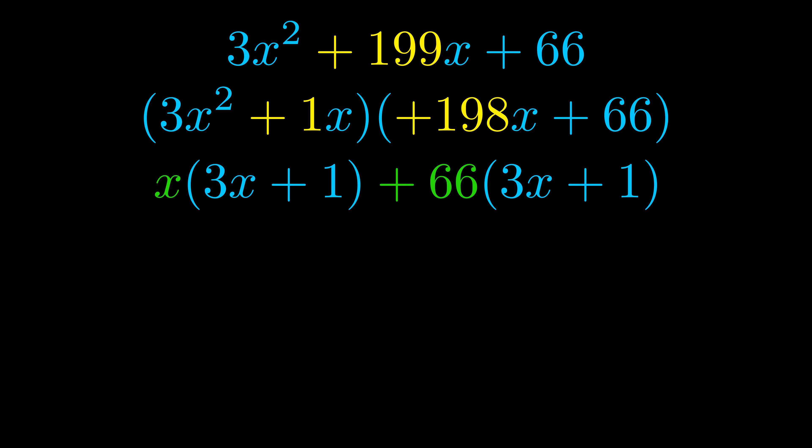Notice also how what remains inside of the parentheses is the same in both cases. The blue values are the same. Those blue values will become one of our factors and we will combine the two green values, the GCFs that we pulled out, to get the other one. And that is our fully factored equation.